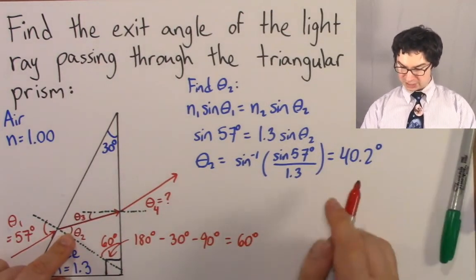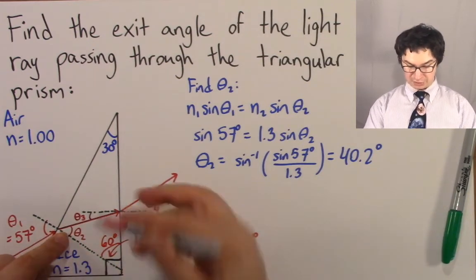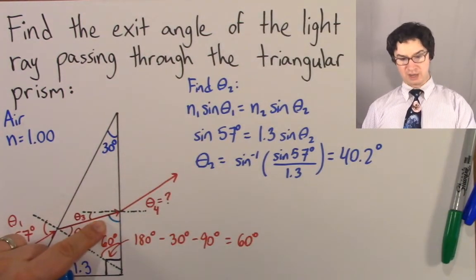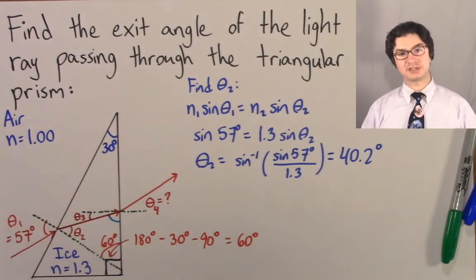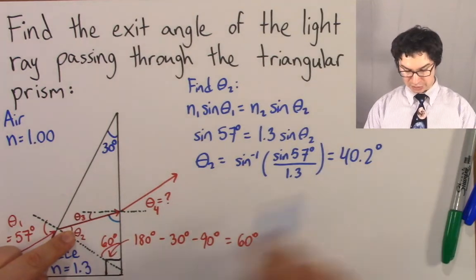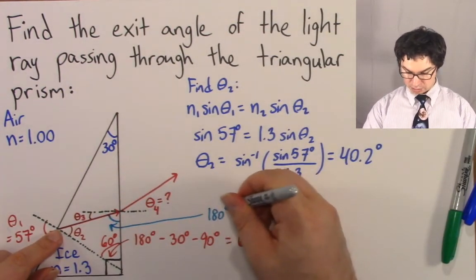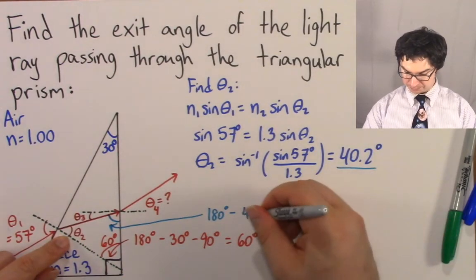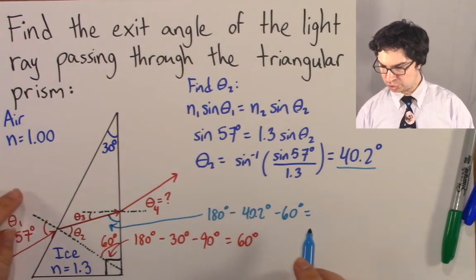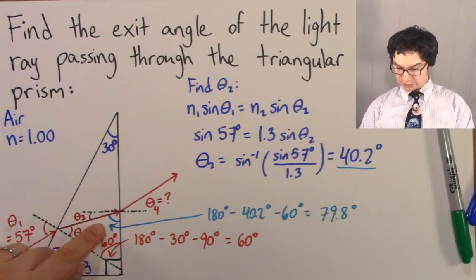Now we know theta 2 is 40.2 degrees and this angle is 60 degrees. Check it out — we have another triangle, and triangles always add up to 180 degrees. So if we take theta 2 at 40.2 degrees, plus 60, plus the unknown angle, that has to add up to 180. That means this angle is 180 minus 40.2 minus 60, which equals 79.8 degrees.